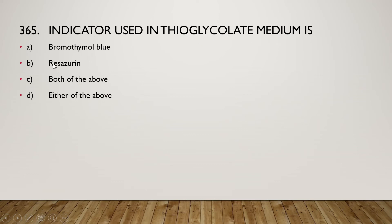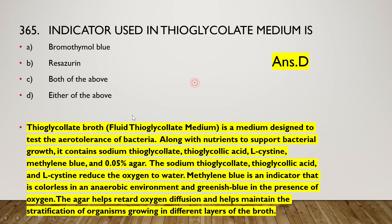Next: the indicator used in thioglycolate medium is bromothymol blue, resazurin, both, or either of the above? The right answer is option D, either of the above can be used. Thioglycolate broth is designed to test the aerotolerance of bacteria. It contains sodium thioglycolate, thioglycolic acid, L-cysteine, or methylene blue, and 0.05% agar.